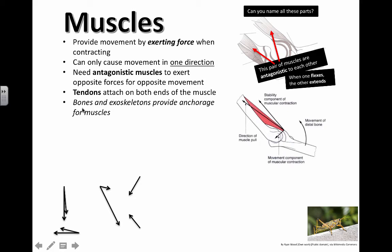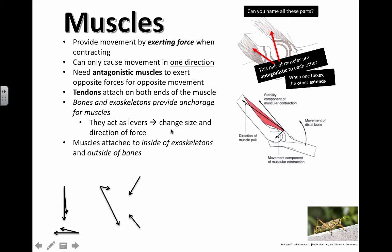And instead of using the bones for leverage, they're using their exoskeletons for the actual leverage. So our muscles are attached to our bones and it pulls these bones backwards and forwards. For things with exoskeletons, the muscles just pull their exoskeleton shell backwards and forwards to get the movement. So these bones or exoskeletons act as levers to help to change the size and direction of the force. So I already mentioned this. Muscles are attached to the inside of exoskeletons and the outside of bones.